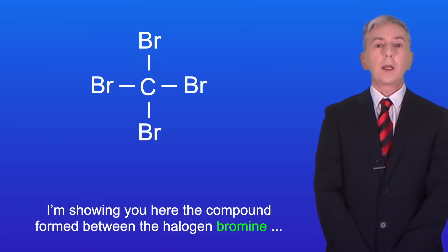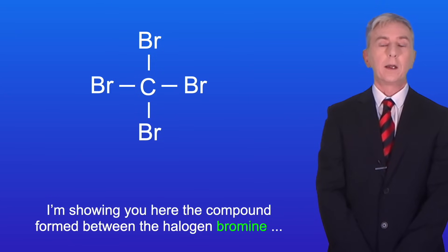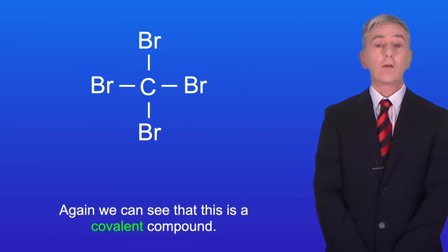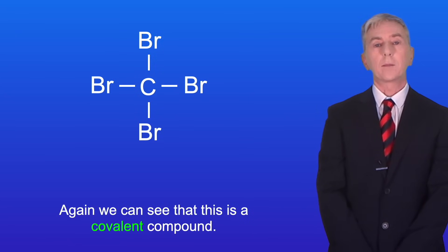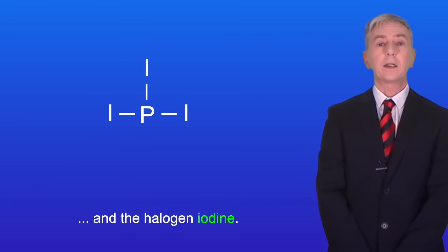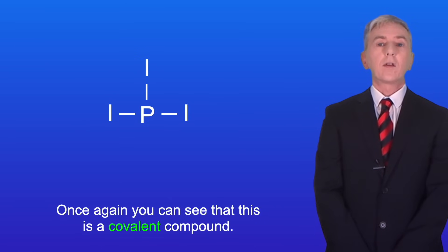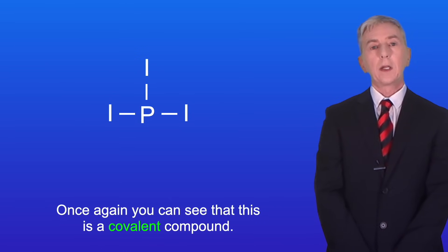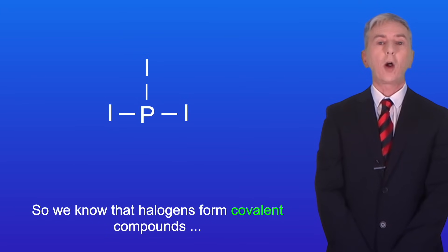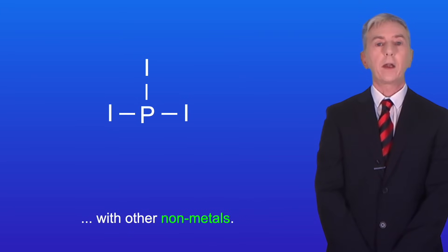I'm showing you here the compound formed between the halogen bromine and the non-metal carbon, and again we can see that this is a covalent compound. Here's a compound between the non-metal phosphorus and the halogen iodine, and once again you can see that this is a covalent compound. So we know that halogens form covalent compounds with other non-metals.